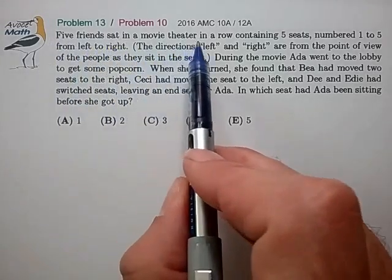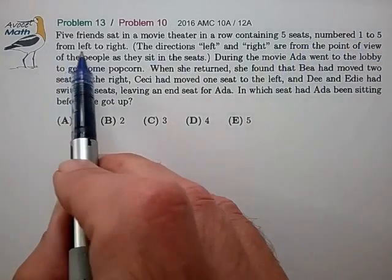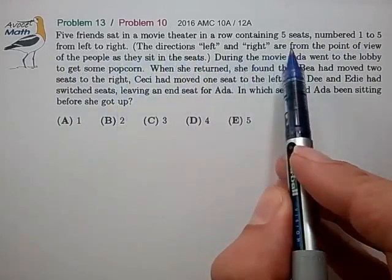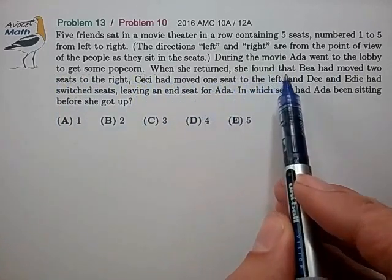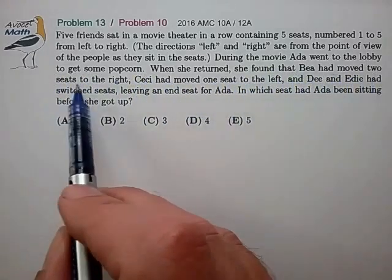Five friends sat in a movie theater in a row containing five seats numbered one through five from left to right. During the movie, Ada went to the lobby to get some popcorn. When she returned,